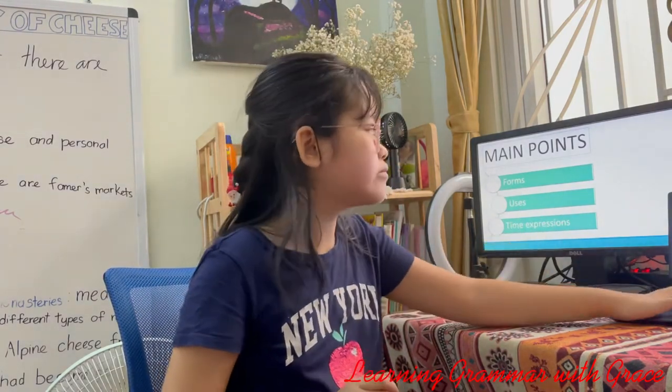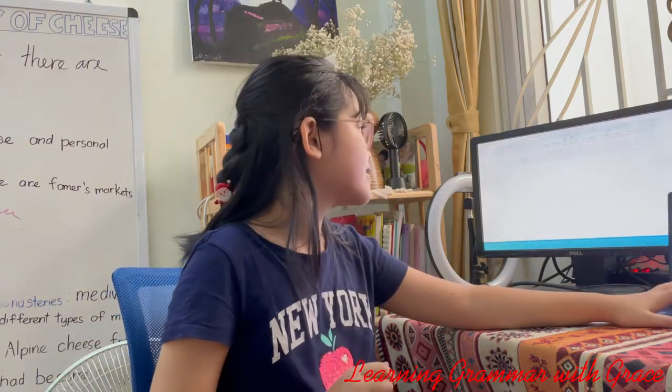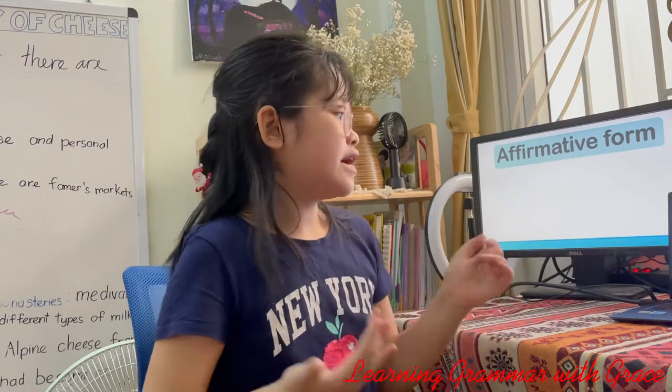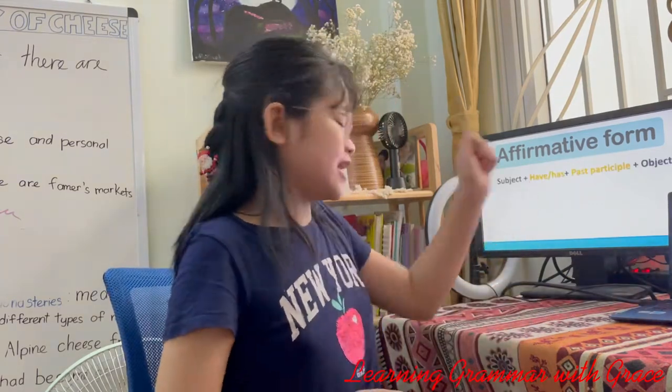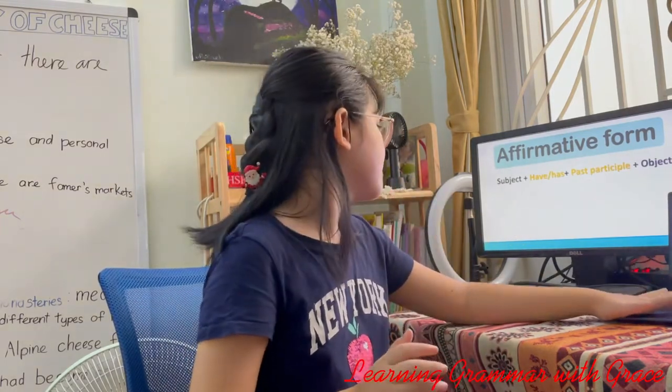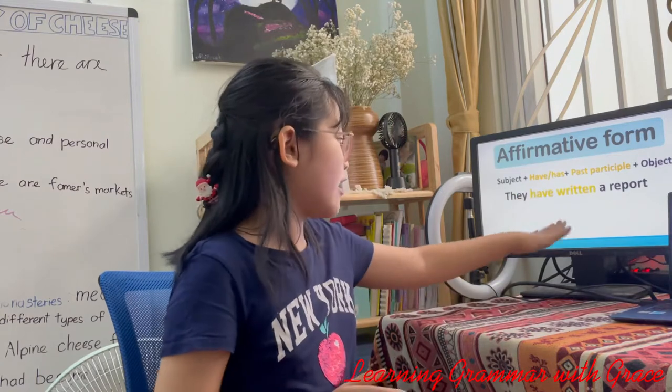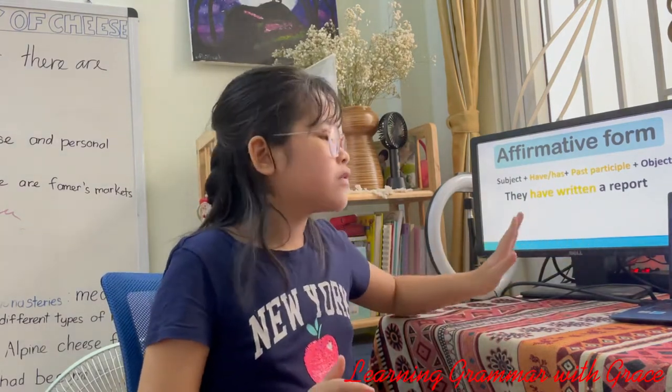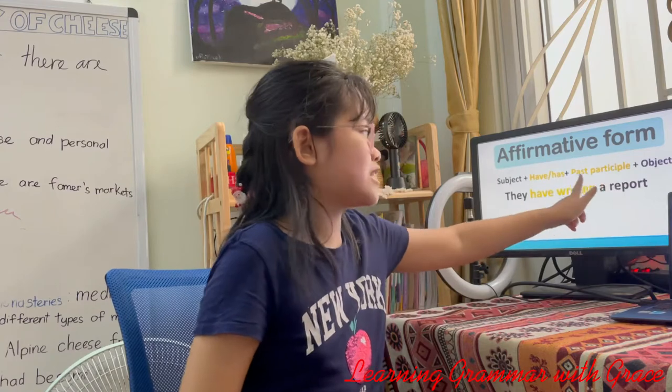First we're going to do the affirmative form. The affirmative form has: subject, plus have or has, plus past participle, and plus object. For example: they have written a report. But do you know what a past participle is? The past participle is V3.